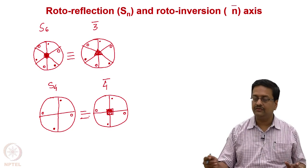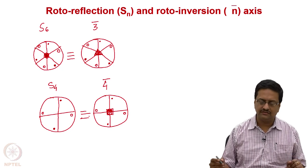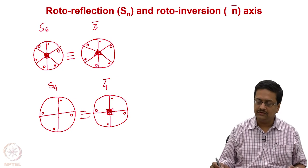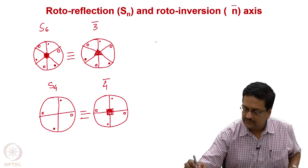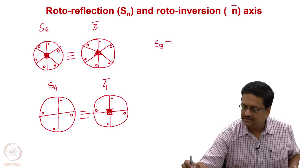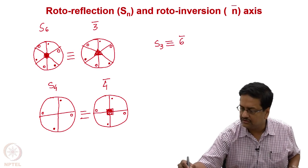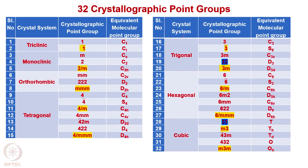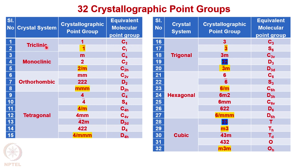I hope you understood the logic behind these drawings. I would like you to try and draw the same for S3 and see whether it is equivalent to 6-bar or not. In this particular slide, I have incorporated all the 32 crystallographic point groups that we encounter in crystallography, along with the corresponding equivalent molecular point group symbol for all these 32 point groups, and these point groups are denoted with the corresponding crystal system.